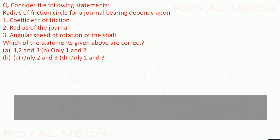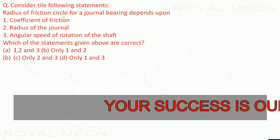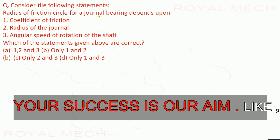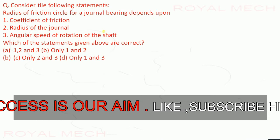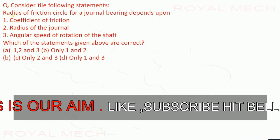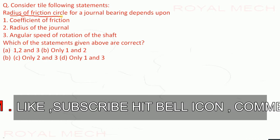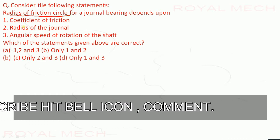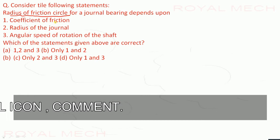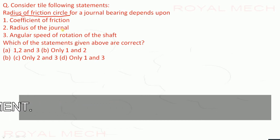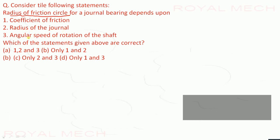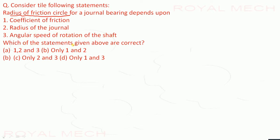Consider the following statements: the radius of friction circle for a journal bearing depends upon the coefficient of friction and the radius of the journal, and the angular speed of rotation of the shaft. Which of the statements given above are correct?